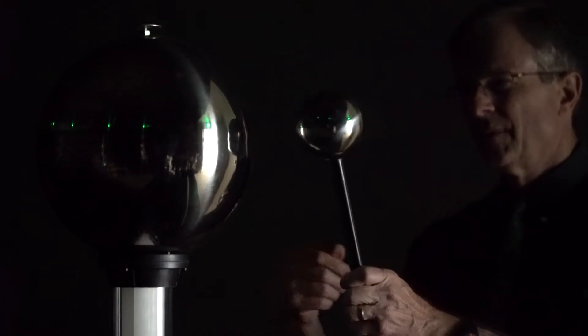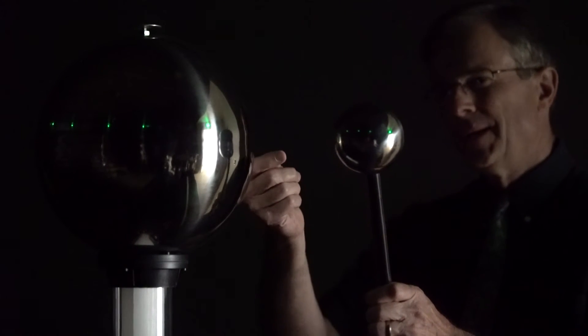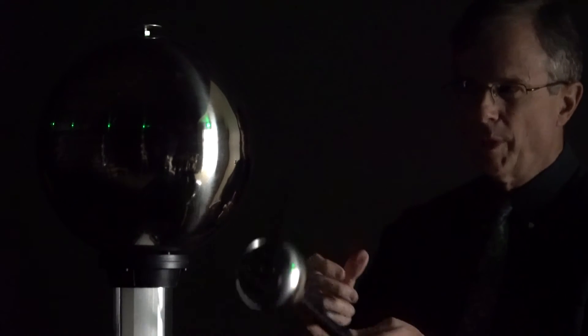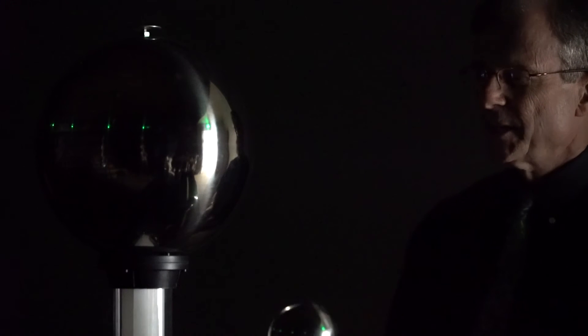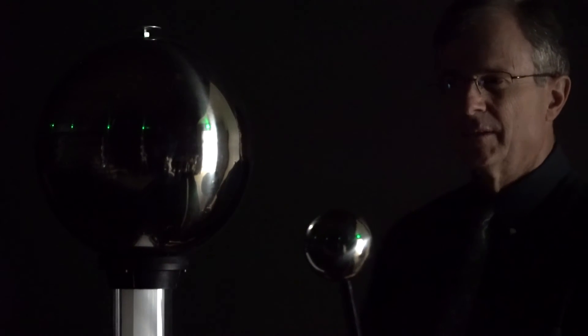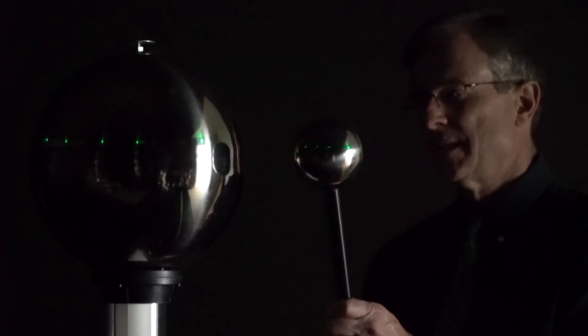So these arcs between the two spheres, like we said, is an expression of dielectric breakdown between the two spheres. And actually what we're getting between them is a plasma. It's the fourth state of matter. Solid, liquid, gas, and then plasma is an ionized gas.